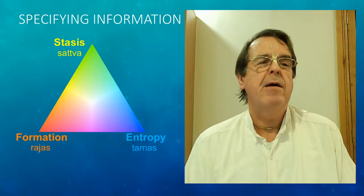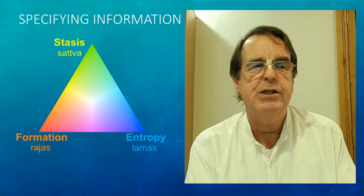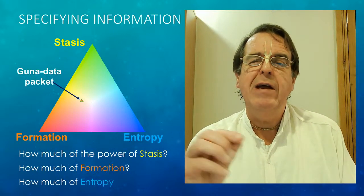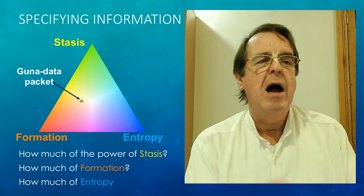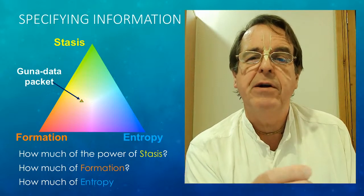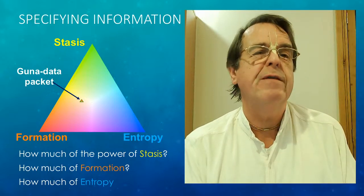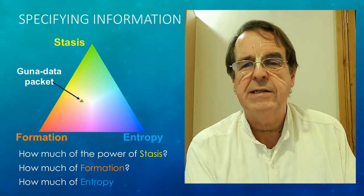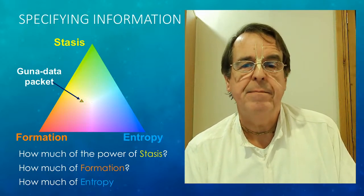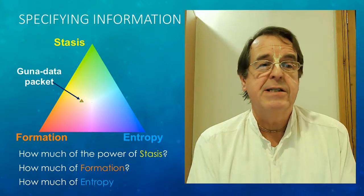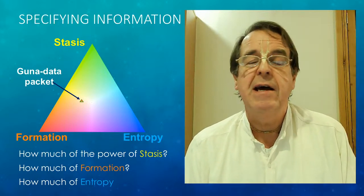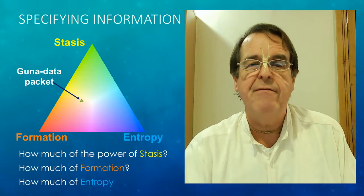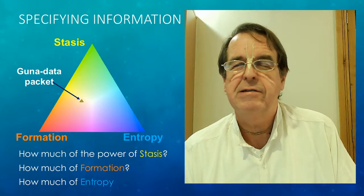So, like a colour spectrum, there are practically unlimited permutations of the mixtures of these three modes. And any particular point in the triangle is therefore a three-way coordinate defined by how much that coordinate has of the power of stasis, how much of the power of formation, and how much of the power of entropy. And I'm going to refer to this combination of the three quantities of the three modes as Guna data. A very important principle for us. Since Sankhya proposes that the combinations of Guna data basically make up all the information that encodes everything that exists within the universe. So Sankhya considers it pretty important.